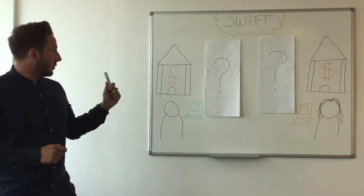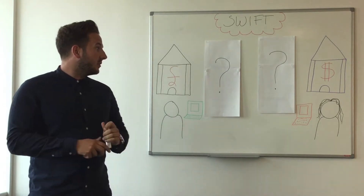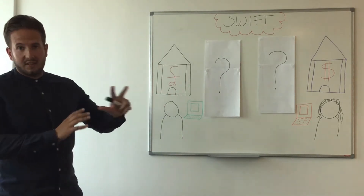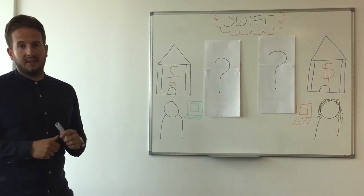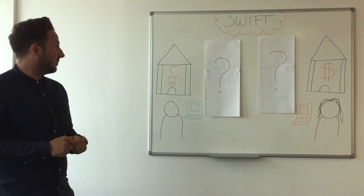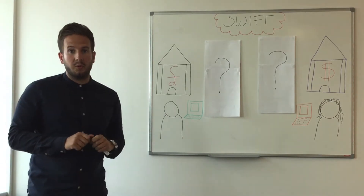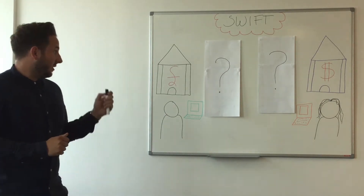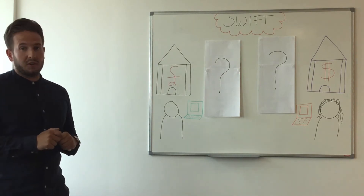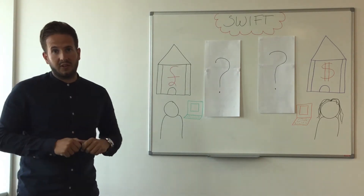We've got a remitter and a beneficiary of funds, and in the middle we've got this unknown of banks and intermediary chains. We call this the 'pay and pray' model, where the remitter sends a payment and fingers crossed hopes it gets to the beneficiary on time.